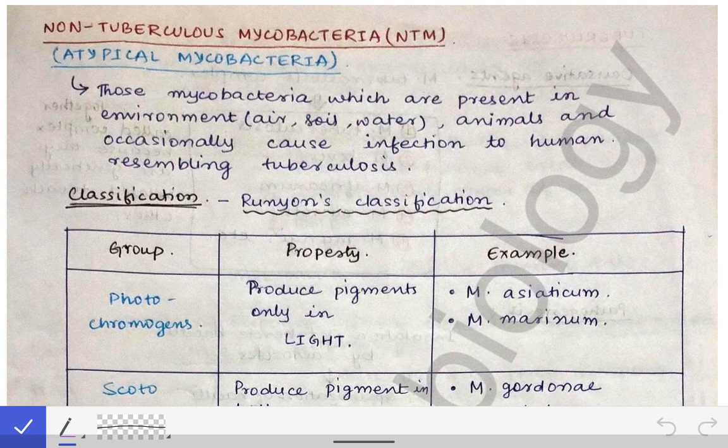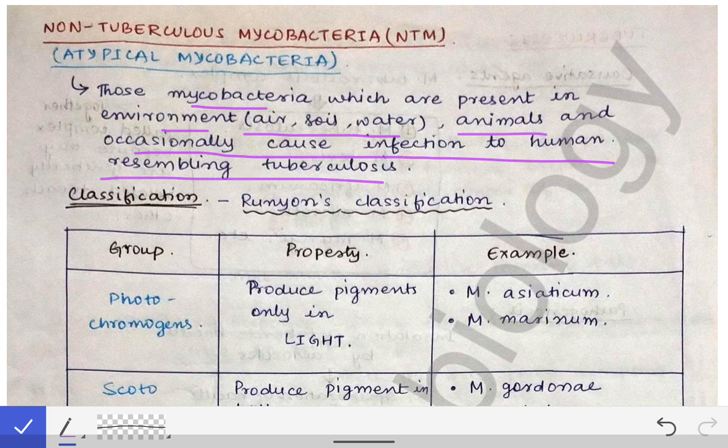Coming to the definition of NTM or atypical mycobacteria: those mycobacteria which are present in the environment — like air, soil, water, and animals — and occasionally cause infection in humans resembling tuberculosis are called atypical mycobacteria. These infections resemble tuberculosis but are not exactly tuberculosis.